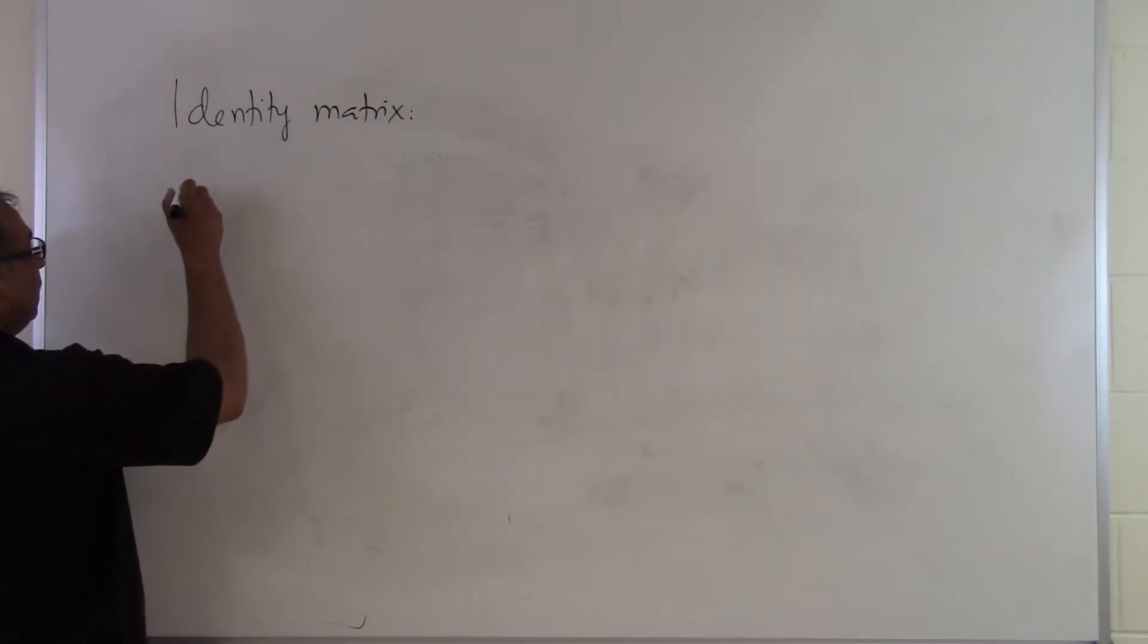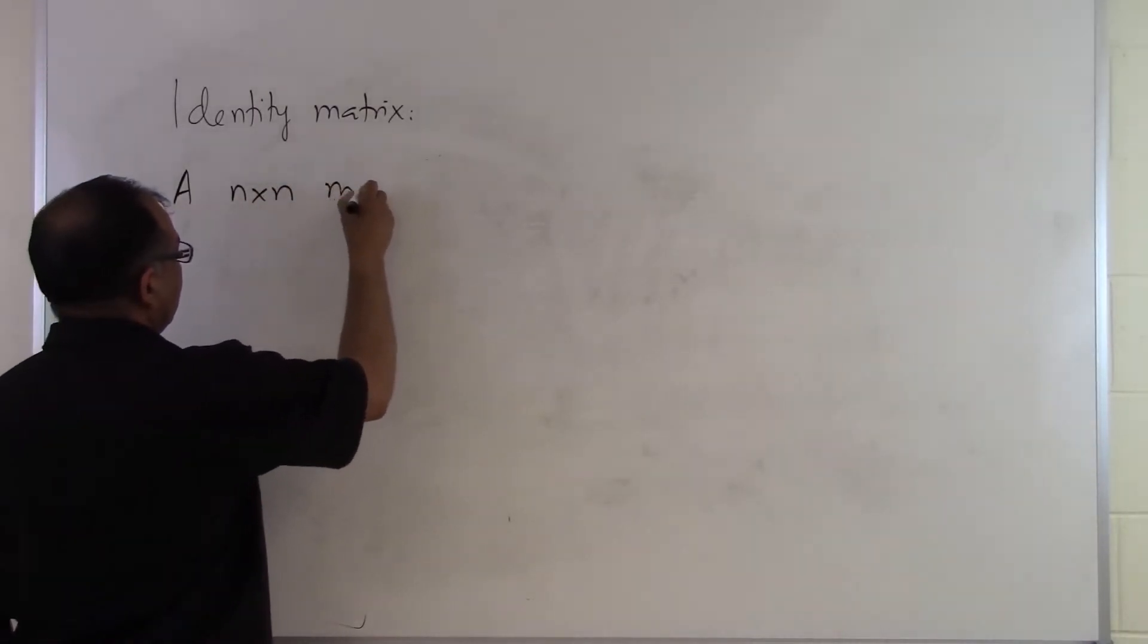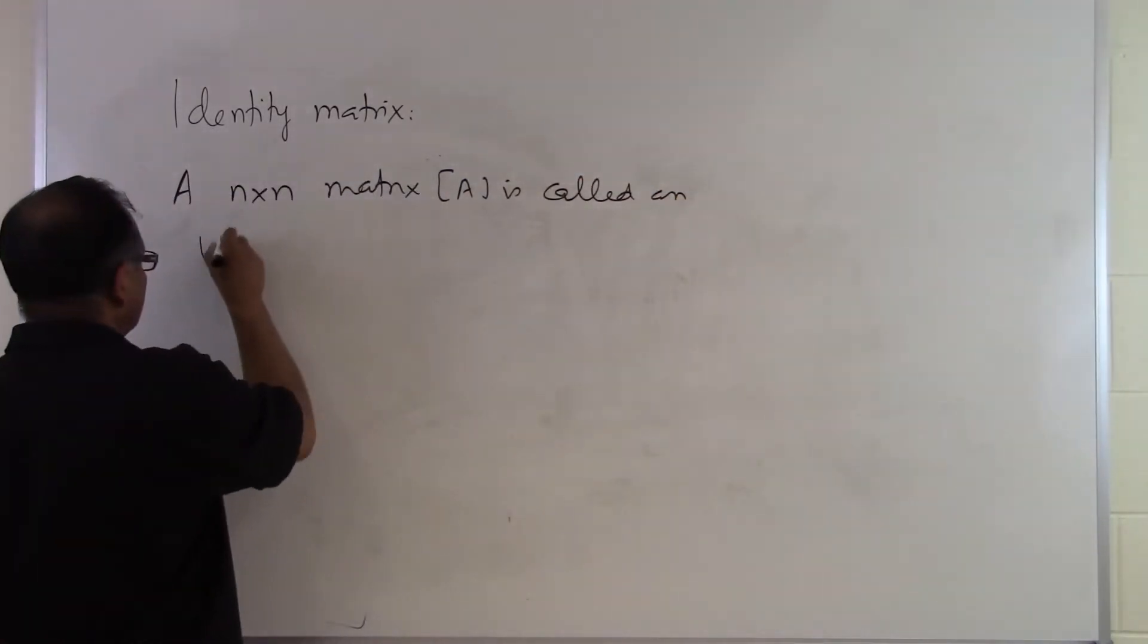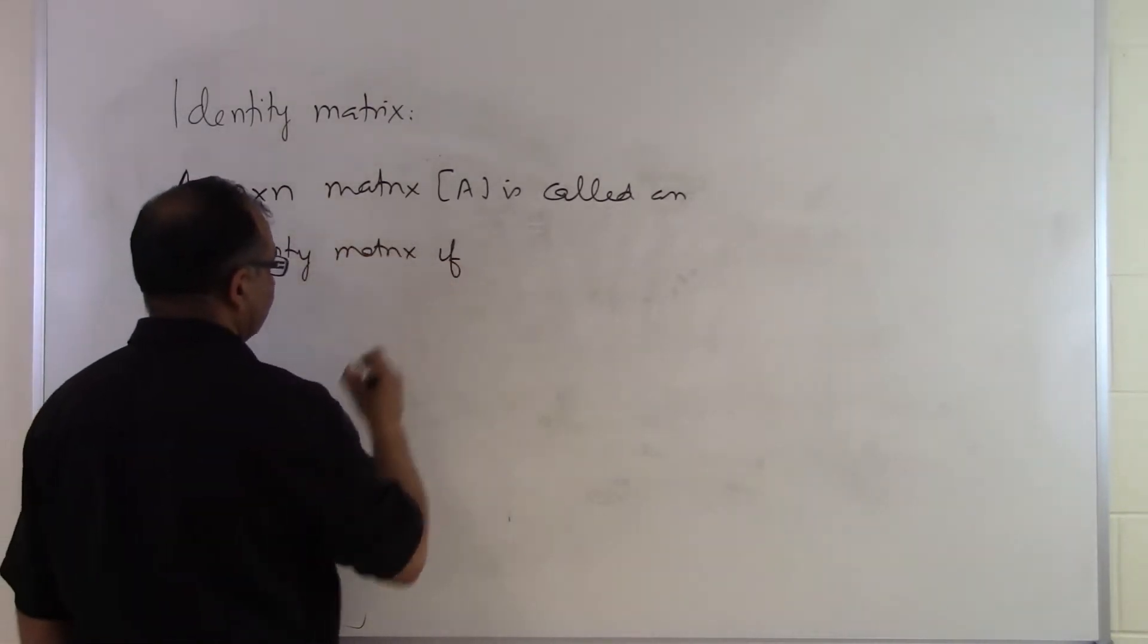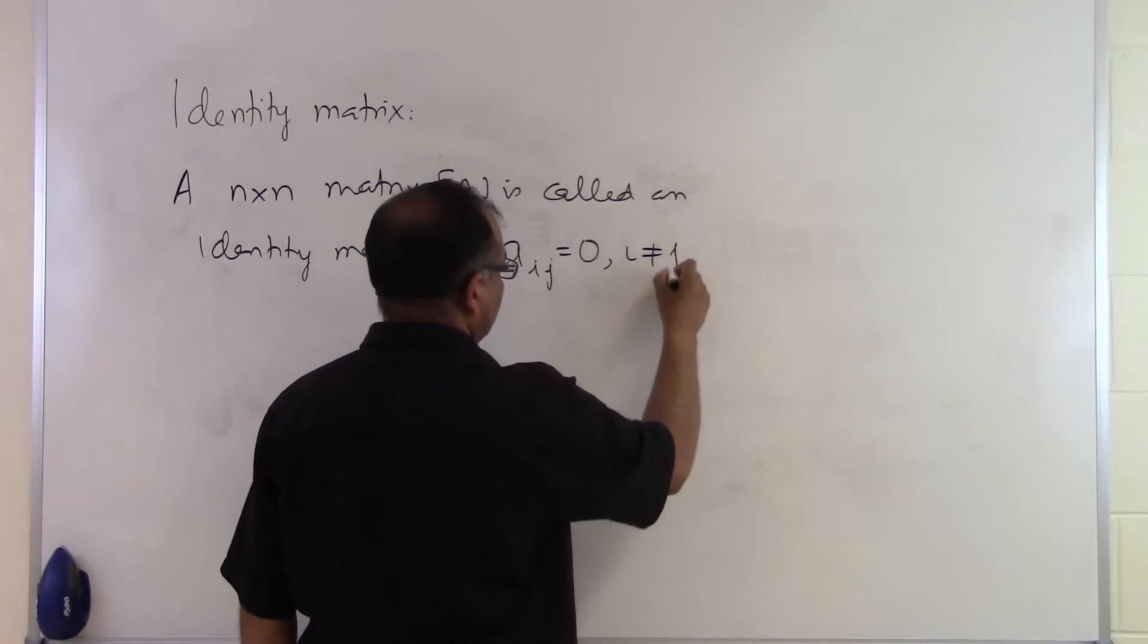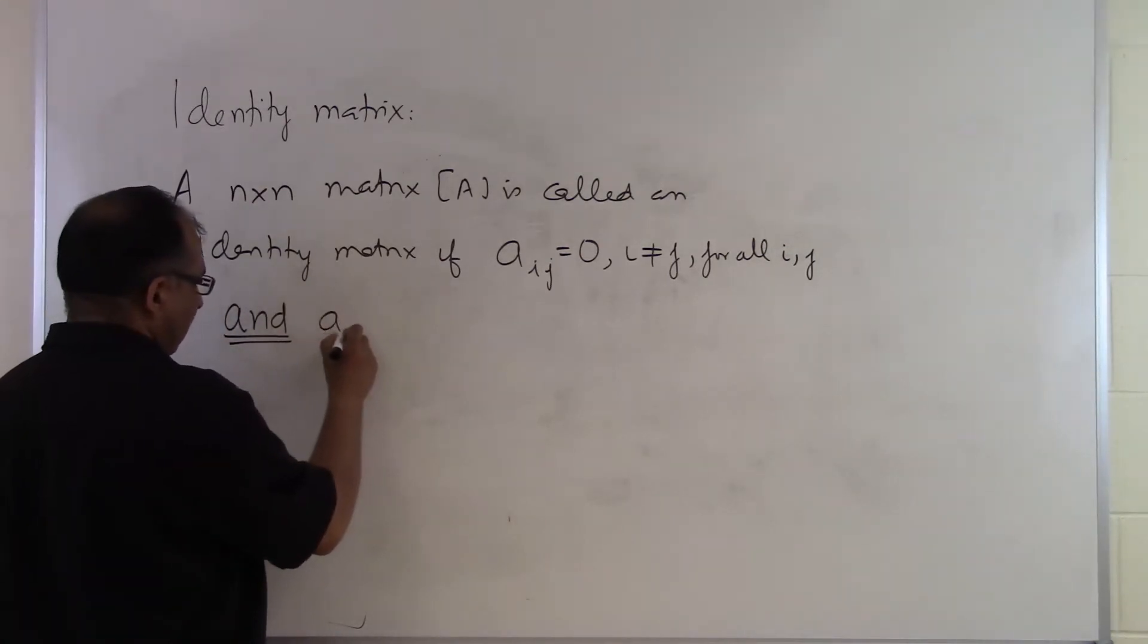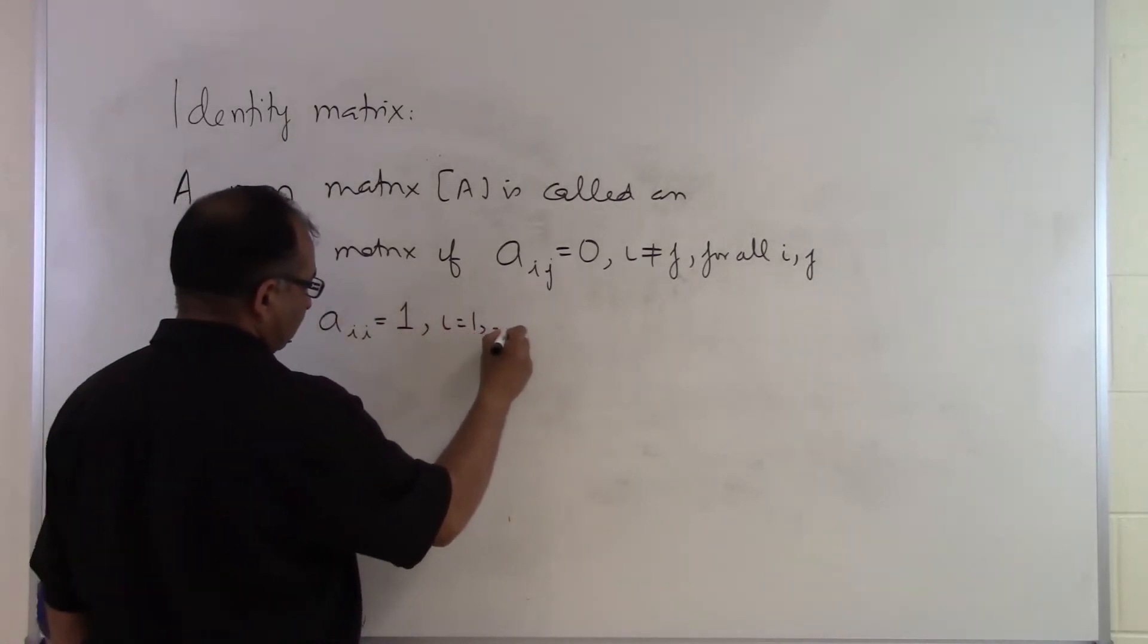Let's see what an identity matrix is. So an identity matrix is a square matrix. Aij is equal to zero for i not equal to j for all i, j, and Aii is equal to one, i is equal to one up to n.